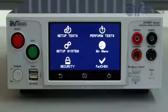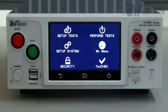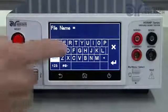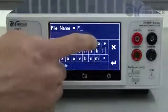To set up a new test sequence, navigate to the main menu by hitting the home key. Touch the setup test menu icon, then press add file to create a new test file. Input the test file name and hit enter.